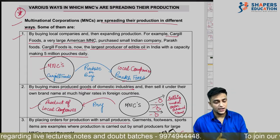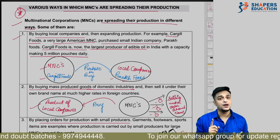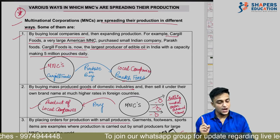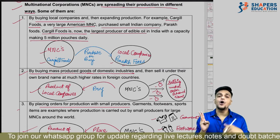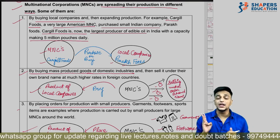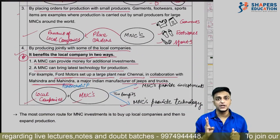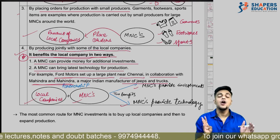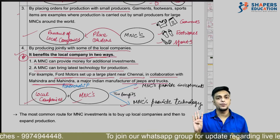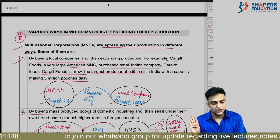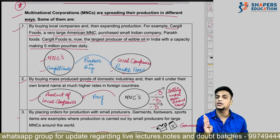To summarize the four ways MNCs spread production: first, by buying the local company (Cargill Foods & Parak Foods example); second, by buying production and selling under their brand name; third, by giving orders to local/small producers; fourth, by partnership or joint venture. Remember all four along with the associated company examples.